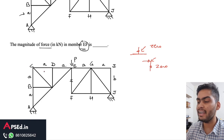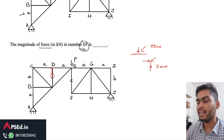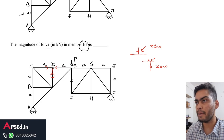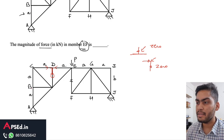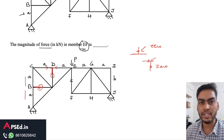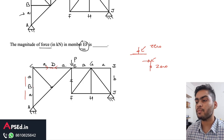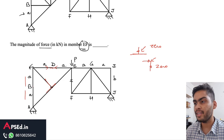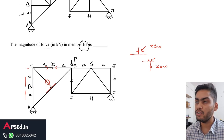Starting with members CD and DE — these are two collinear members. The vertical member from joint D is a zero force member, since no component of forces in CD and DE acts along it. Similarly, members BA and BC are collinear, so the third member perpendicular to them is also a zero force member. After removing these, the member starting from joint C perpendicular to the remaining members also becomes a zero force member.